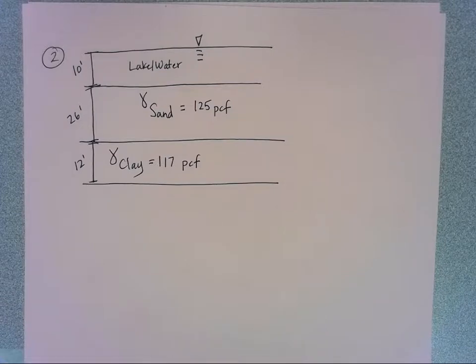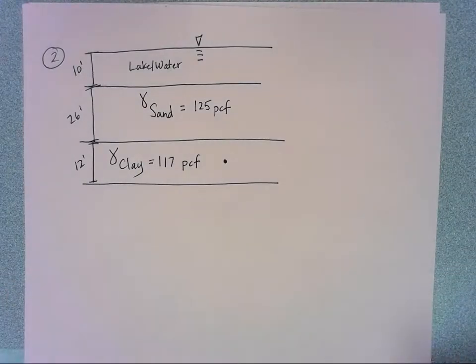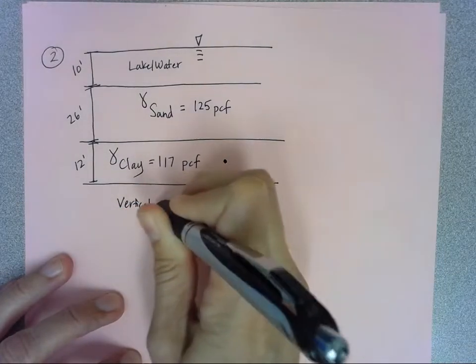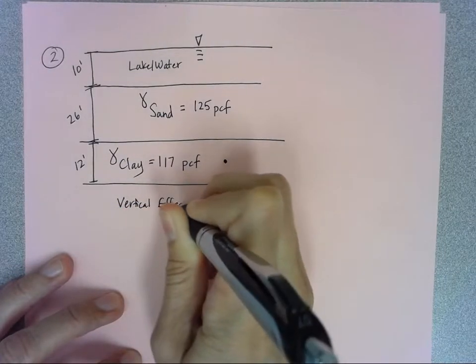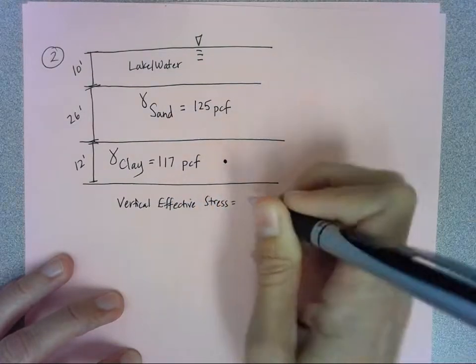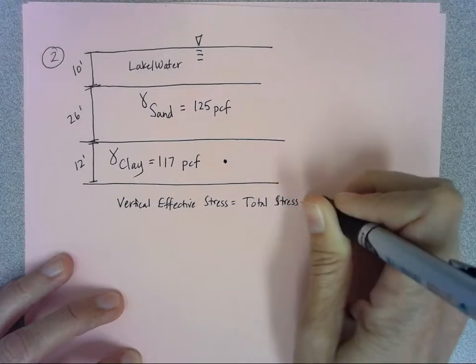We want to find the midpoint of the clay. Let's mark that point where we want to find the effective vertical pressure. Remember that our vertical effective pressure, or vertical effective stress - we can use either term - is going to be the total stress minus the pore pressure.